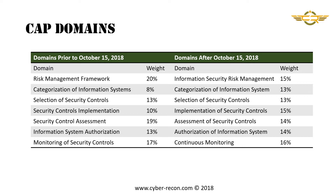After October 15, the domains change to: Information Security Risk Management at 15%, Categorization of the Information System at 13%, Selection of Security Controls at 13%, Implementation of Security Controls at 15%, Assessment of Security Controls at 14%, Authorization of the Information System at 14%, and Continuous Monitoring at 16%.